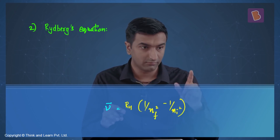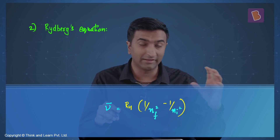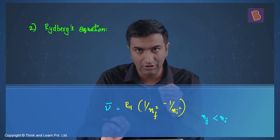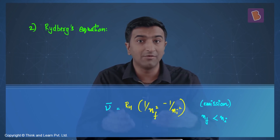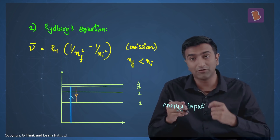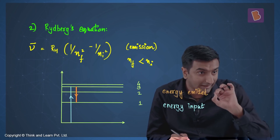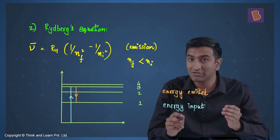The other idea is Rydberg's equation. When emission happens — specifically because that's what is asked — the wave number equals this expression, where 1/nf² is on one side and 1/ni² is on the other. Remember, nf is going to be lower than ni because emission is happening. The blue line in the diagram shows an electron being excited to a higher energy level, after which it falls down and the extra energy is given off as radiation — that's the emission we're talking about.